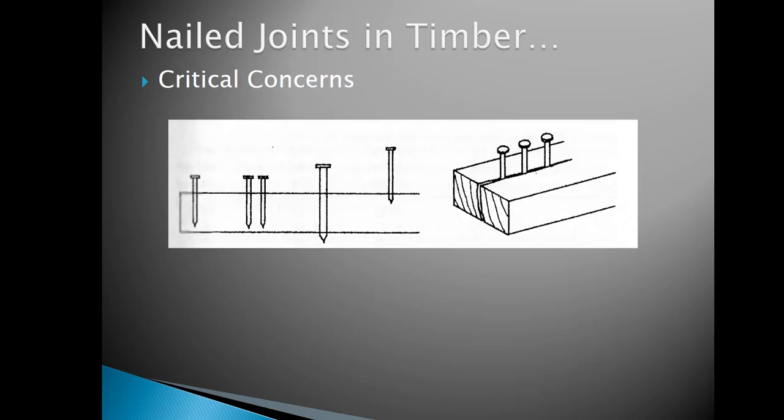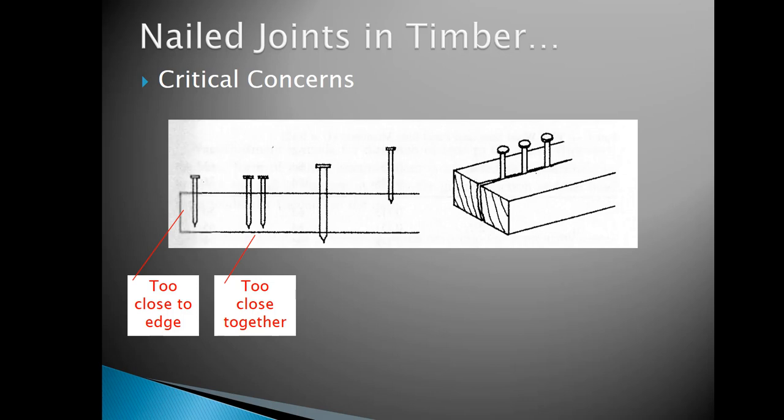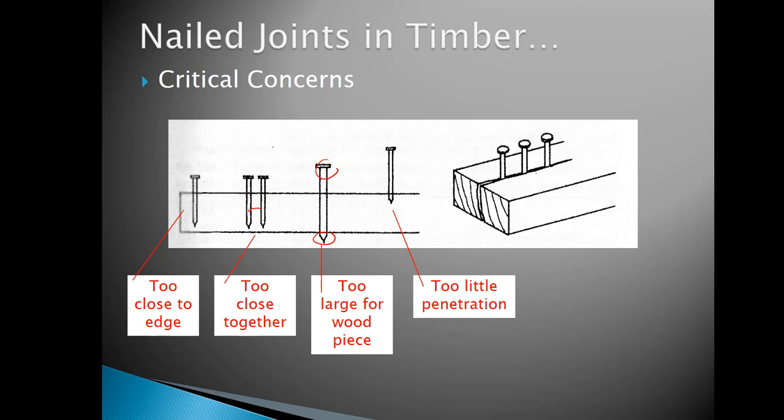Like with bolts, getting too close to the edge causes problems. This diagram shows several issues: nails too close to the edge, nails too close together that split out the fibers, nails too large poking out the other side without full penetration, and too little penetration that pulls out easily. Too many nails too closely spaced split out the wood grains, and your nail capacity for that joint goes away.